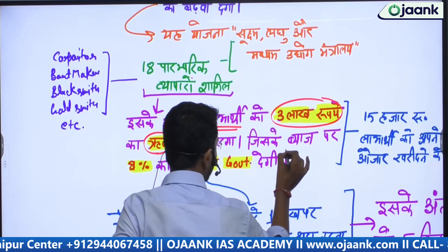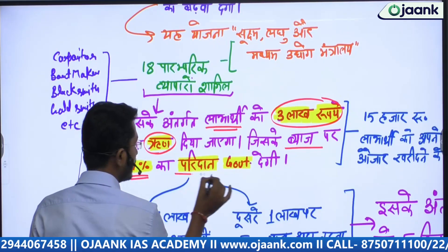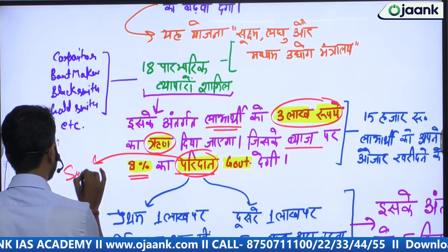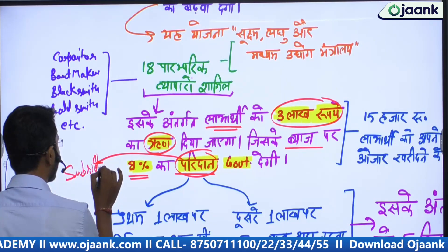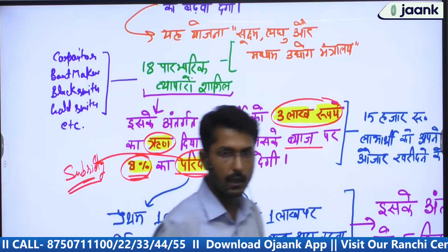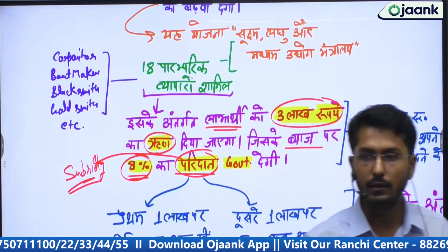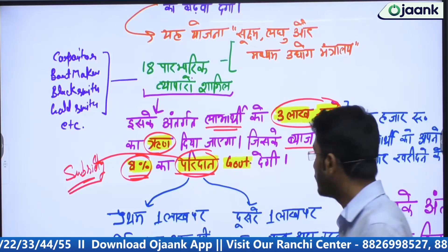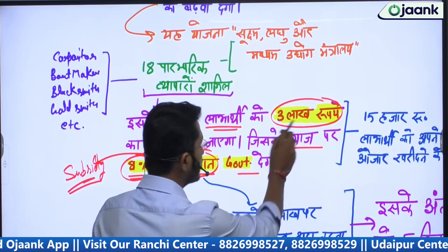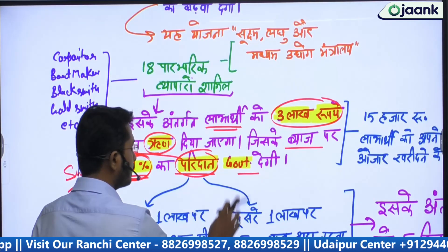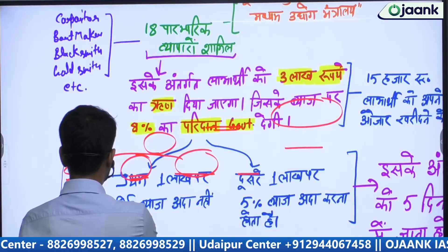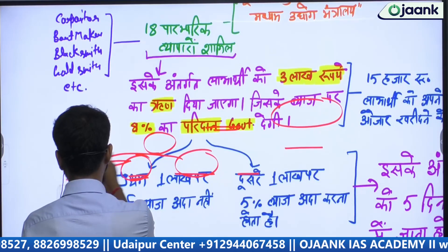In addition to this, there is up to 8% interest subsidy — paridat, meaning subsidy — on the interest. Up to 8% subsidy on whatever interest is charged on the loan — the government will support that here. Furthermore, the ₹3 lakh will not be given all at once. These three lakh rupees will be given in separate installments — three parts.